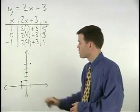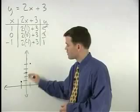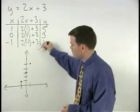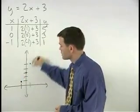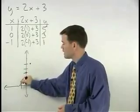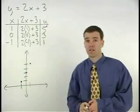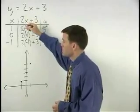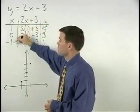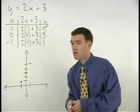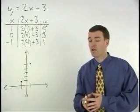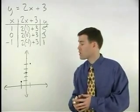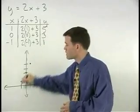Notice the pattern that is formed by these 3 points. They all lie along the same line. In fact, if we had chosen any other value to plug into the equation for x, besides 1, 0, or negative 1, we would have ended up with a different point. But that point would also lie along this line.